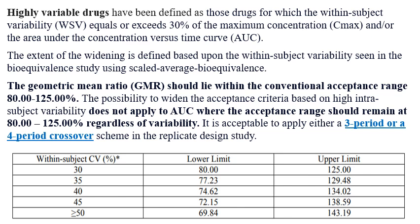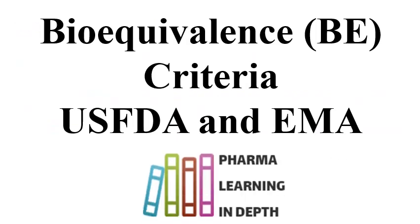You cannot directly widen the Cmax limits just because variability is present. There should be no clinical relevance concern, or the applicant should justify that the Cmax variation is not impacting the clinical or therapeutic outcome of treatment. That's why you can widen the Cmax limit only if you prove the drug is highly variable. This was the information regarding bioequivalence criteria, similarities and differences between USFDA and EMA. Thank you for watching the video.